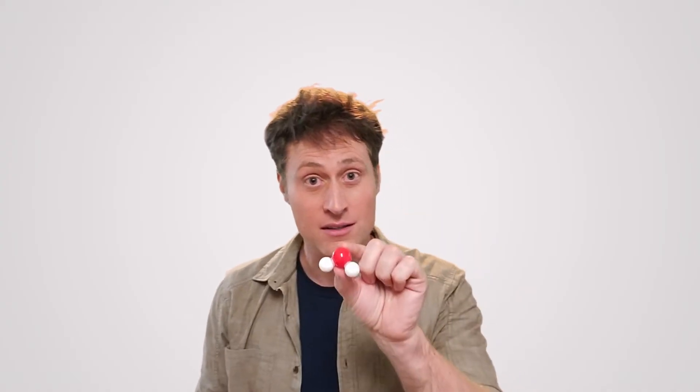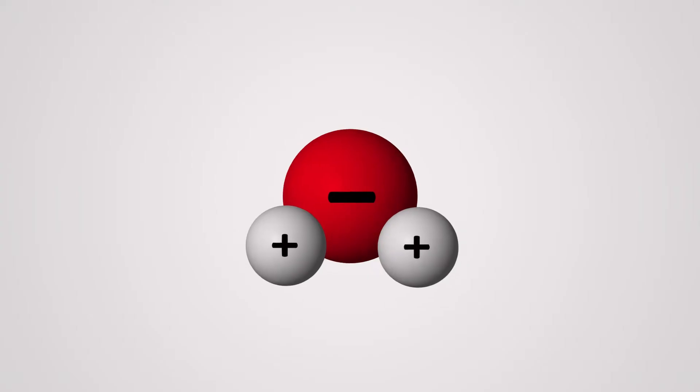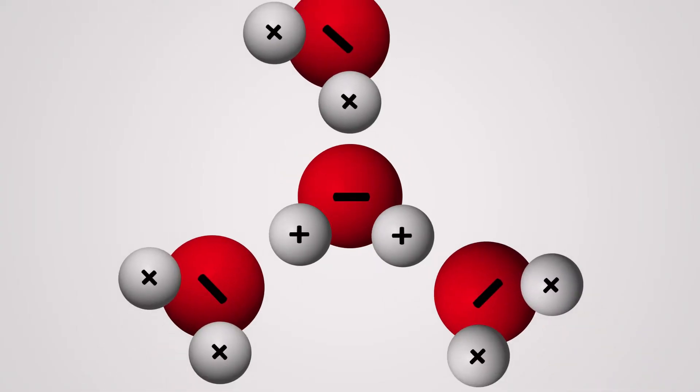Water is just two elements, three atoms: one oxygen and two hydrogen, and it looks just like this — well, not just like this; it's smaller and not color-coded. The oxygen atom has a negative charge and the hydrogen atoms have a positive charge, so just like a positive and negative in a magnet, they attract each other.